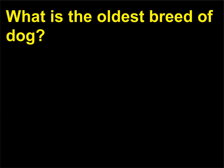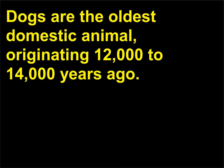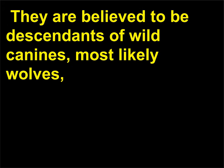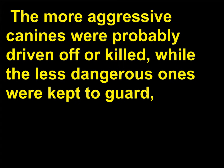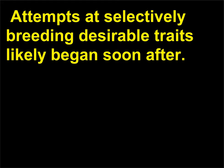What is the oldest breed of dog? Dogs are the oldest domestic animal, originating 12,000 to 14,000 years ago. They are believed to be descendants of wild canines, most likely wolves, which began to frequent human settlements where food was more readily available. The more aggressive canines were probably driven off or killed, while the less dangerous ones were kept to guard, hunt, and later herd other domesticated animals such as sheep. Attempts at selectively breeding desirable traits likely began soon after.